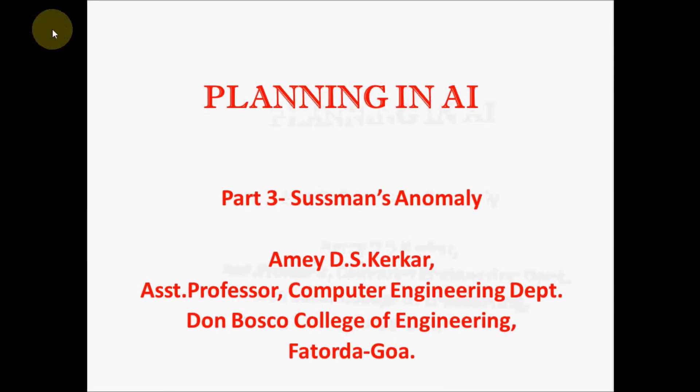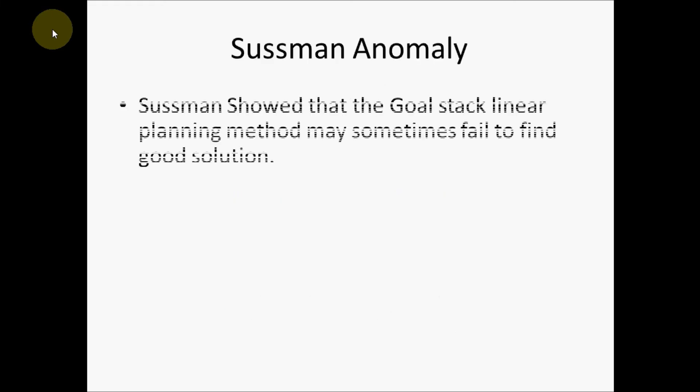Hello friends, welcome back. In this Part 3 of the Planning chapter, today we are going to discuss Sussman's Anomaly. Sussman discovered that the goal stack planning which we have seen in the previous videos does not always work efficiently. He detected an anomaly. He showed that the goal stack linear planning method may sometimes fail to find a good solution.